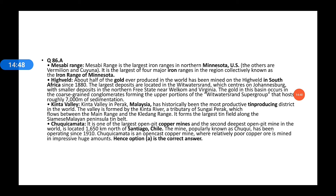Kinta Valley in Perak, Malaysia, has historically been the most productive tin-producing district in the world. The valley is formed in the Kinta River distributary of Sungai Perak, which flows between the Main Range and the Keledang Range. It forms a larger sphere along the Malay Peninsula.